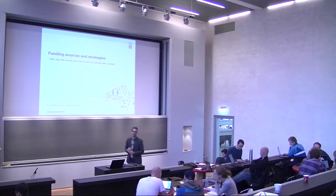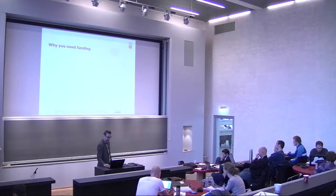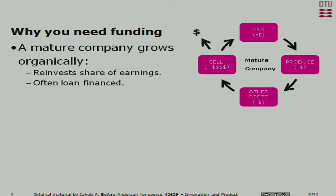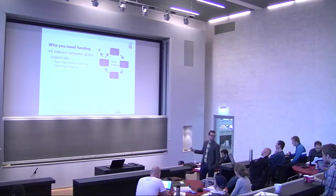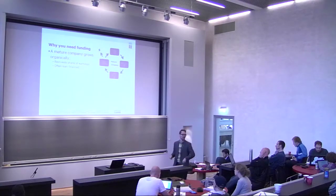We should get started with the last part of the lecture, which is the first time we're really getting deep into the notion of getting funding and where to get it. It's very important to realize why you need funding. In a normal, mature, healthy company, you have a cycle: you do the R&D, produce the products, sell them, cover sales and administrative costs, and the revenue from selling gives you enough to restart that cycle, maybe even with a profit.